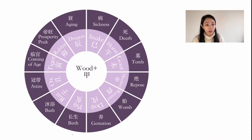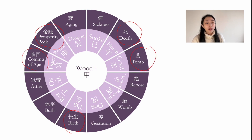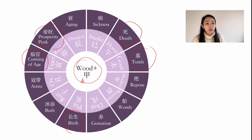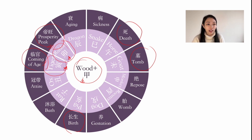Now let's look at the interactions and highlight a few very important phases: birth, coming of age, prosperity peak, death, and tomb. Let's use yang wood as an example. To yang wood, the highest peak in its life cycle is tiger and rabbit, which are wood — those are yang wood's coming of age and prosperity peak. There's a rule in this life cycle: if it's a yang element, it goes clockwise; if it's a yin element, it goes counterclockwise.